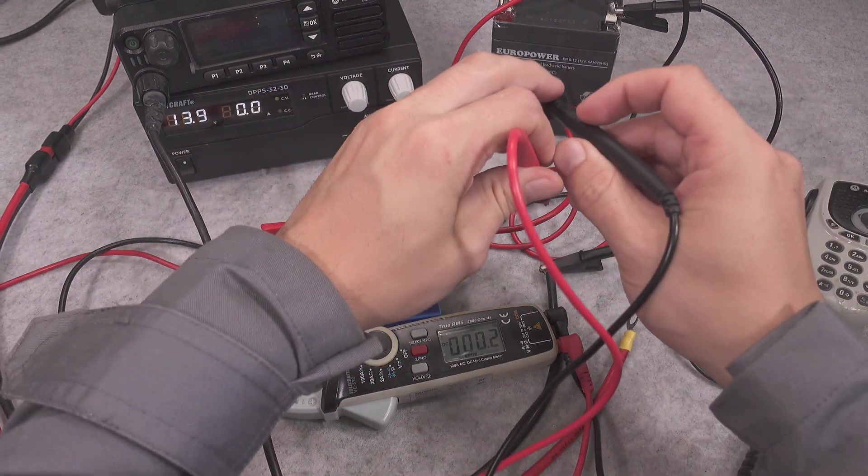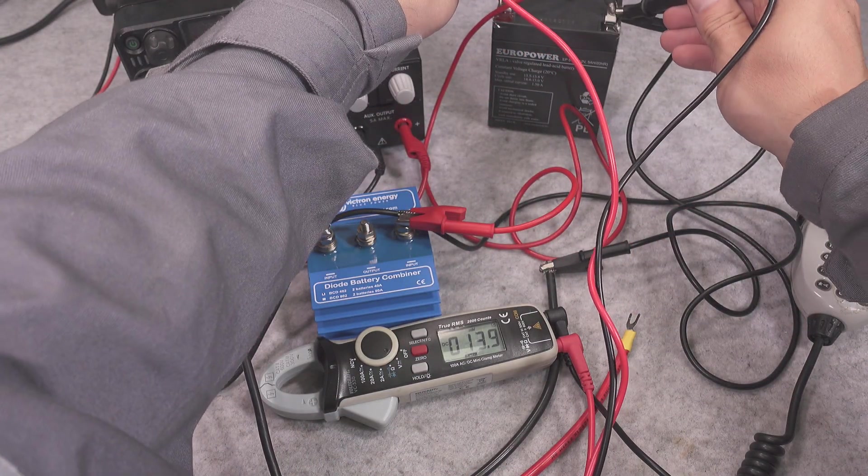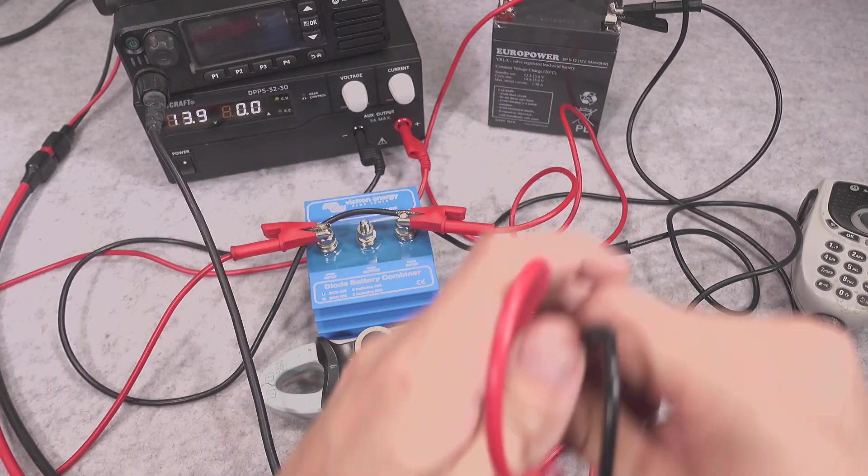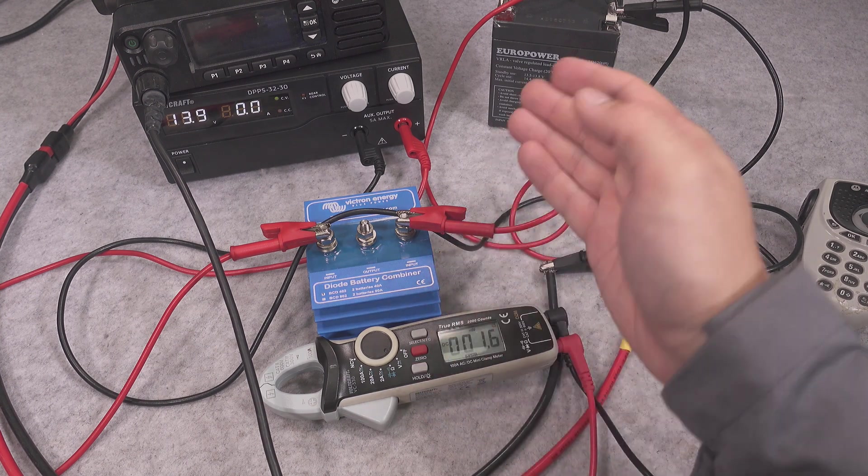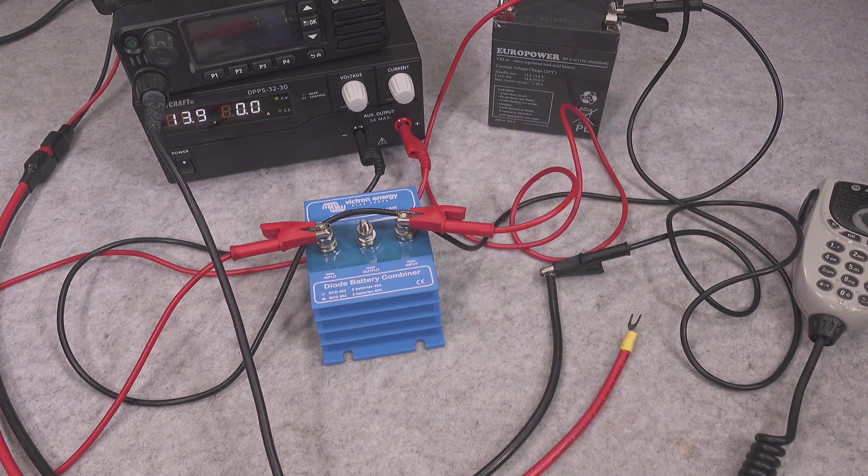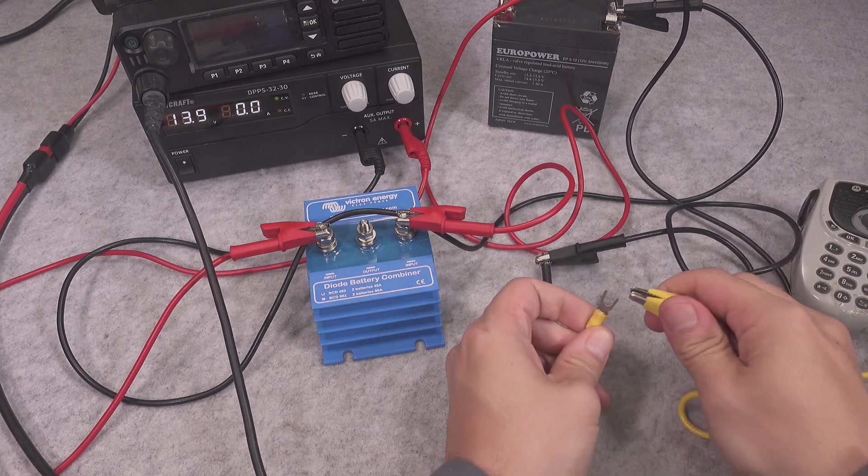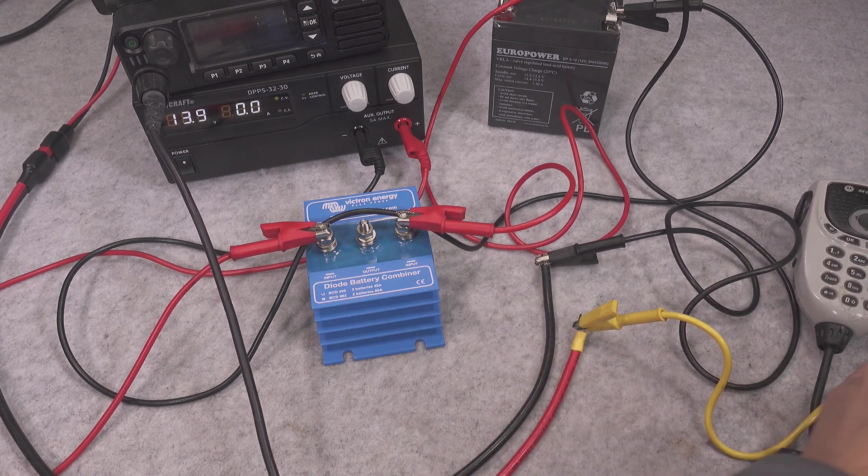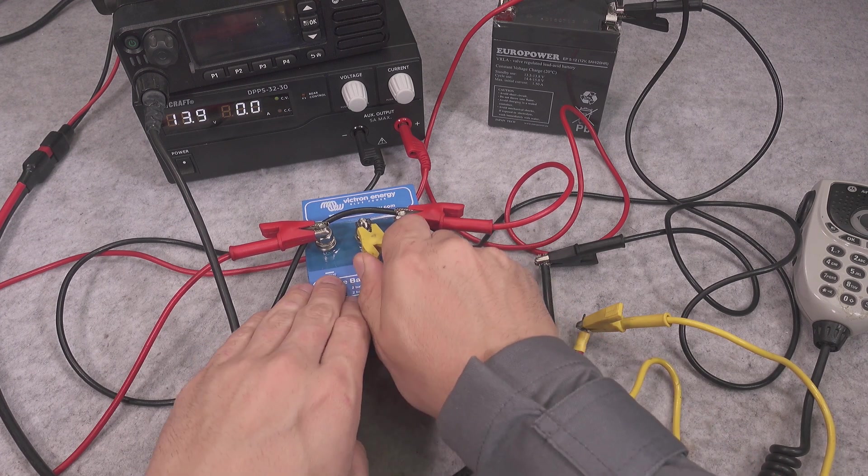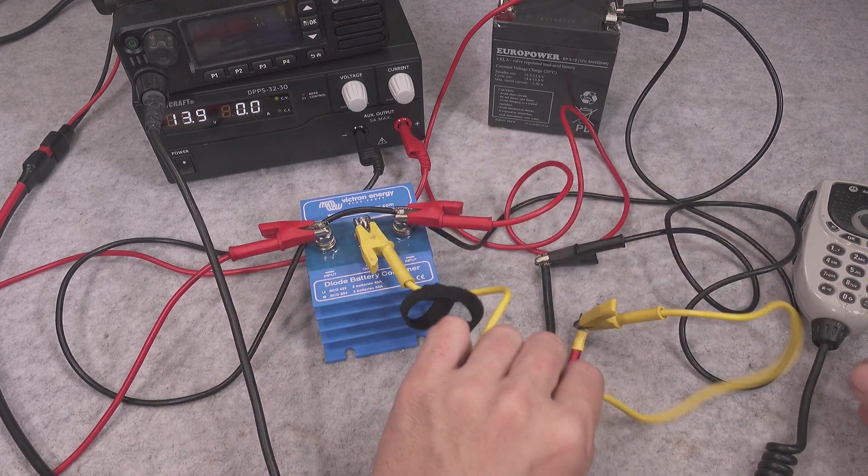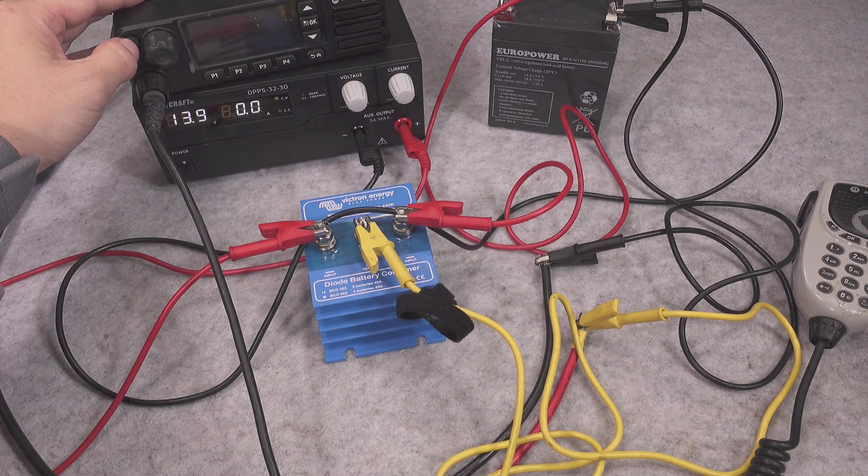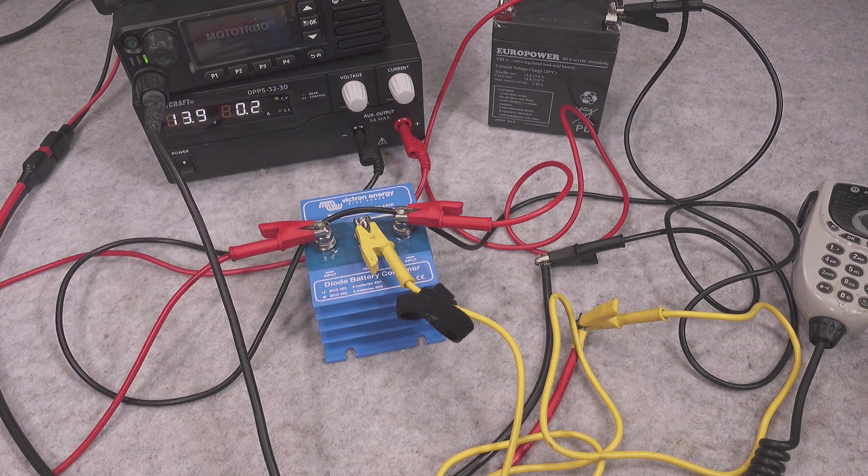And if we measure our battery then of course we've got 12.5 volt. So the current should be flowing but it's not because it goes through the battery combiner. And I will grab our yellow as the positive output and we are going to attach it to the central point. And from that moment our radio is critical load and we can power it on. And it's booting up.